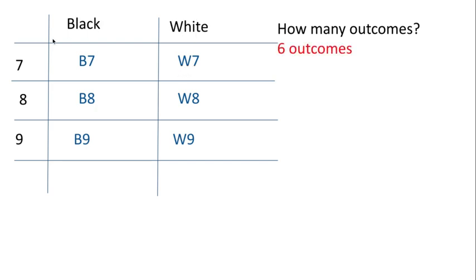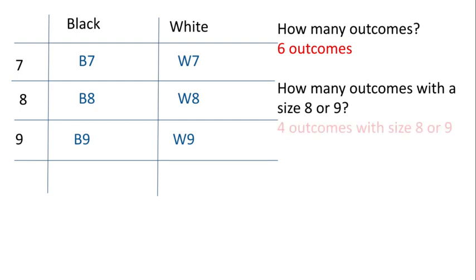I'm not counting the top or the sides. And then the second question is how many outcomes with a size 8 or 9? So in these six different combinations, how many of them show size 8 or show size 9? Well there's four of them. These four are either a size 8 or a size 9.